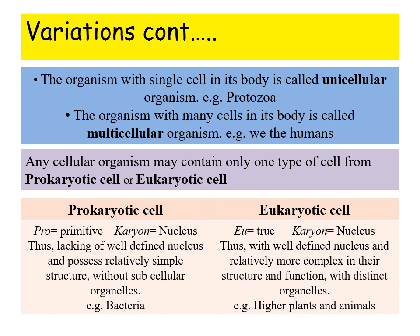Just for an idea, let us break down the terminology. 'Prokaryote' — 'pro' in Greek means initial or primitive, and 'karyon' means nucleus. So prokaryotes lack a well-defined nucleus and possess a relatively simple structure without membrane-bound subcellular organelles; example: bacteria. On the other hand, 'eu' means true, and again 'karyon' means nucleus. Thus eukaryotes have a well-defined nucleus, are relatively more complex in structure and function, and possess distinct intracellular organelles; examples include higher plants and animals.